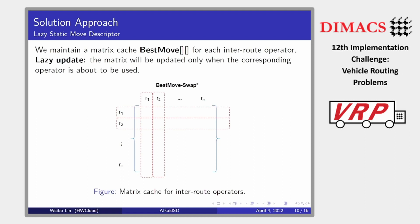To further speed up the local search procedure, we adopt a mechanism called the lazy static move descriptor. Specifically, we maintain a matrix BestMove for each inter-route operator, where BestMove[R1][R2] stores the best move of the corresponding neighborhood associated with routes R1 and R2. Since each local search step affects two routes, only two rows and two columns of the matrix need to be updated after a neighborhood move. We adopt a lazy update mechanism where the matrix is updated only when the corresponding operator is about to be used. This caching method saves a lot of unnecessary re-evaluations and is quite easy to implement.